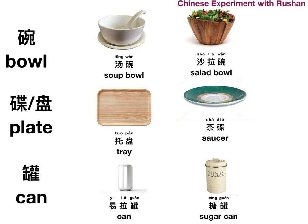Next: bowl, plate, and can. 汤碗 — a soup bowl. 沙拉碗 — a salad bowl. 托盘 — a tray; 托 means to hold. 茶碟 — a saucer; 茶 means tea, so it's a plate for tea. 罐 — a can; 易拉罐 means easy-pull can. 糖罐 — sugar can. 糖 means sugar.